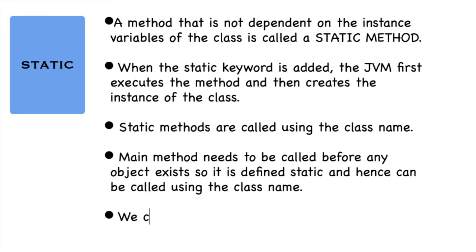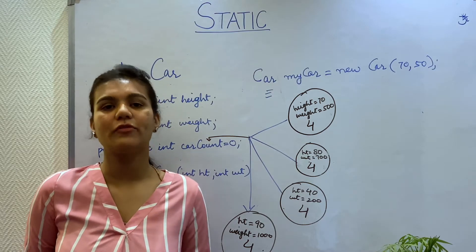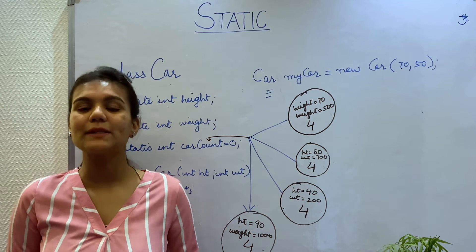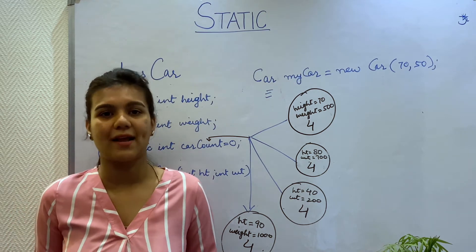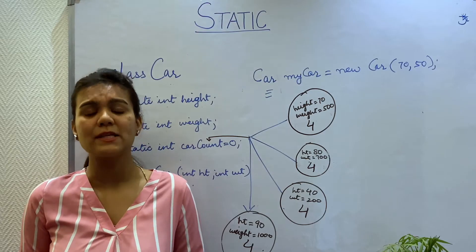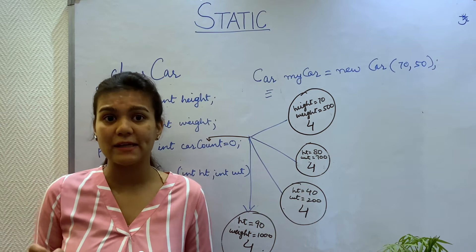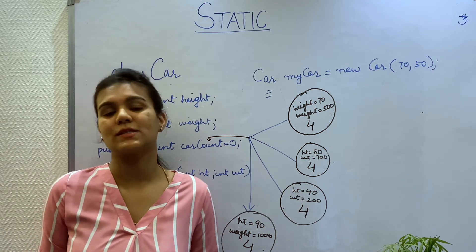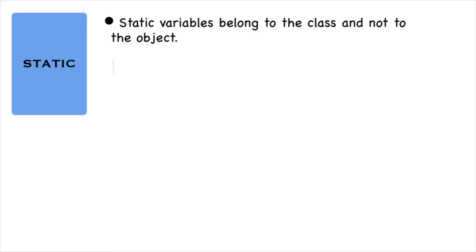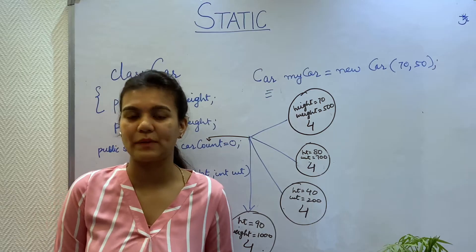You can declare both members of the class and the methods of the class as static. When variables of a class are declared static, it means that they belong to the class and not to the instance of the class. So no copies of those variables will be made for each instance — all the instances will share the same static variable.